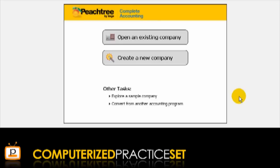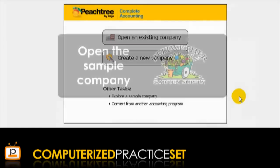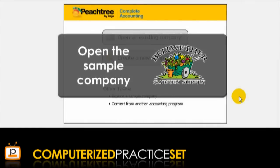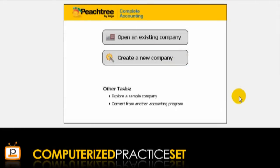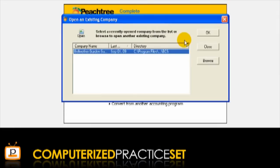Let's start with exploring Peachtree using a sample company. The first thing you need to do once you have opened Peachtree is to open the sample company. We will do this by clicking on the Open an existing company button, clicking on Bellwether Garden Supply to highlight it, and then clicking OK.